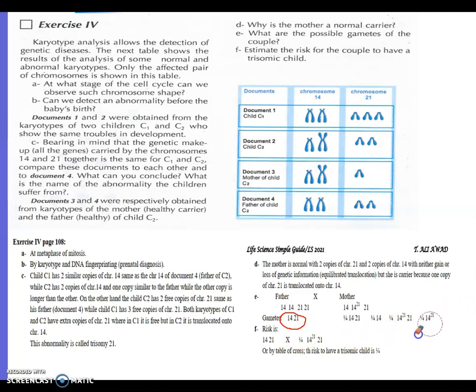If this gamete and this gamete fertilize each other, you'll get two 14s and three 21s, trisomy 21. So the risk to have a trisomic child is 1 over 4. The proportion of the abnormal gamete that will produce the trisomy is 1 over 4. One over four times one, because there's only one gamete here. So we will obtain a trisomic child. This gamete with 1 over 4 probability with this gamete will give us a trisomic child with the risk 1 over 4.